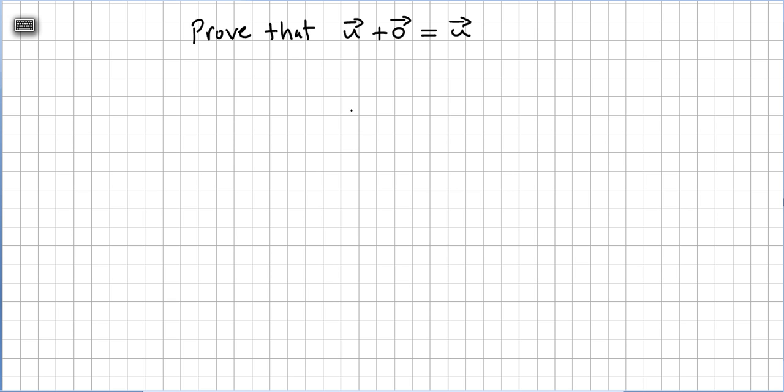We are now asked to prove that vector u plus the null vector or the zero vector equals u. So this will be from the vectors point of view the identity for the addition of vectors. Let us prove this.